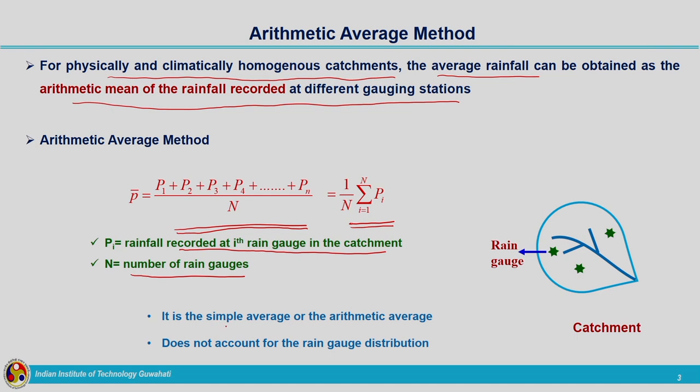This is a simple averaging method — we have n number of rain gauges and we average out the data from all of them to get the average rainfall from the catchment. It is a very simple method but it does not account for the rain gauge distribution. There is no idea related to the spatial arrangement; we are just collecting data and calculating the average value. It can be applied for very flat, uniformly distributed rainfall occurring areas.